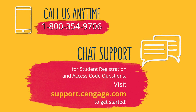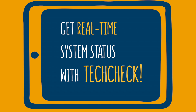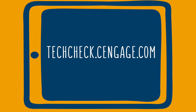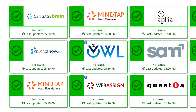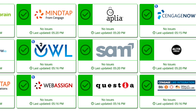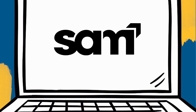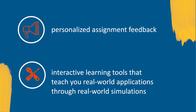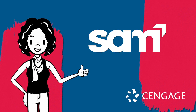And if you're in a pinch, don't worry. You can contact us directly at support.cengage.com. With 24/7 live chat, we're here to help you with whatever you need, whenever you need it. Get real-time system status with TechCheck — TechCheck.cengage.com provides immediate insight into system performance, so you can quickly see if Cengage is experiencing technical difficulties. Now that you're here, explore your SAM course filled with helpful resources like personalized assignment feedback and interactive learning tools that teach you real-world applications through real-world simulations. It might just surprise you how much you like it. I don't think digital learning has ever been as cool as it is now, but you'll be the judge of that.